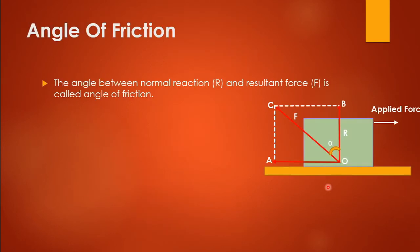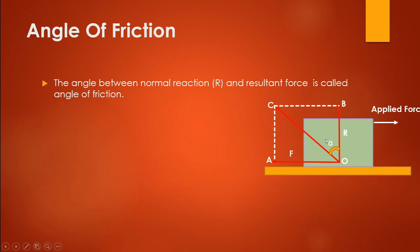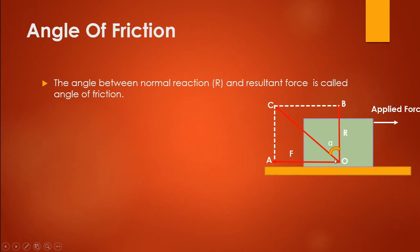Next is the angle of friction. The angle of friction is the angle between the normal reaction and the resultant force. Here, R is the normal reaction due to the weight of the body, and F is the frictional force. The applied force acts in one direction, so the frictional force acts in the opposite direction. The resultant of normal reaction R and frictional force F is the vector OC.